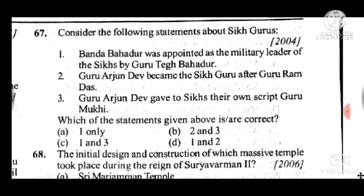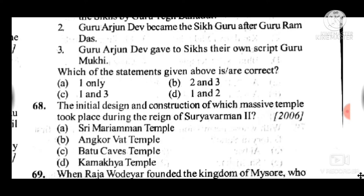Question 68: The initial design and construction of which Southeast Asian temple took place during the reign of Suryavarman II? Answer is B, Angkor Wat Temple.